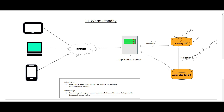The advantage of warm standby is that a backup database is ready to take over without manual intervention — unlike cold standby, where you must upload data from S3 or tape before routing traffic. The disadvantage is that for very large datasets, you need an equally large standby database. For example, if the primary is 1 TB, you need another 1 TB standby. Also, you cannot distribute read and write operations between the databases in this setup.